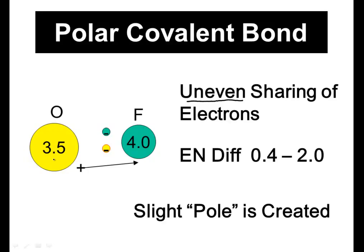That's pretty electronegative, but I want you to see when I subtract these two values of 4.0 minus 3.5, I end up with a 0.5 difference. That now falls between 0.4 and 2.0. That is the value range that I need to be a polar covalent bond. And what's going to happen is a slight pole, a slight plus minus will be created.